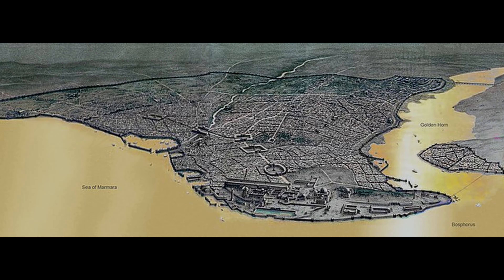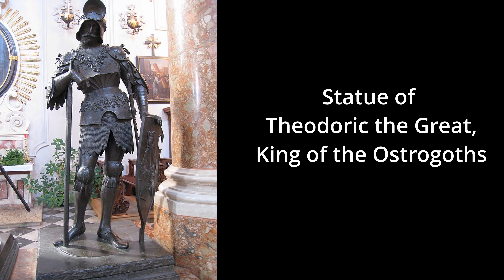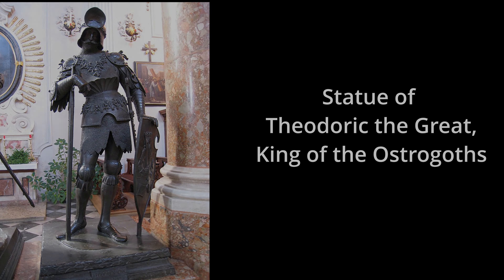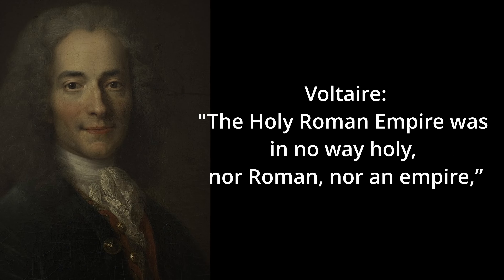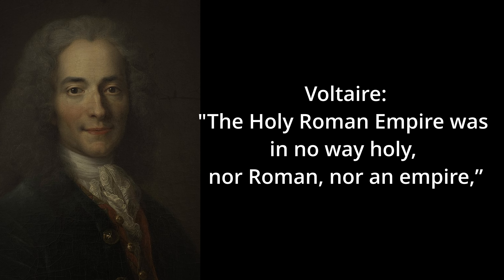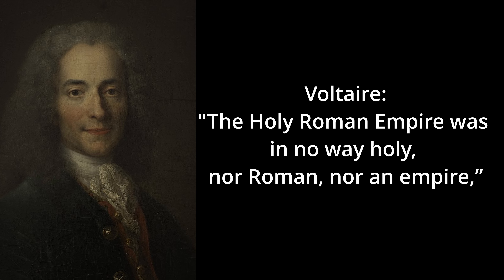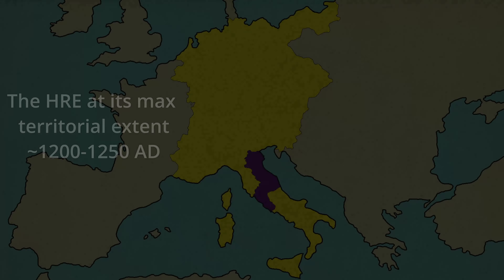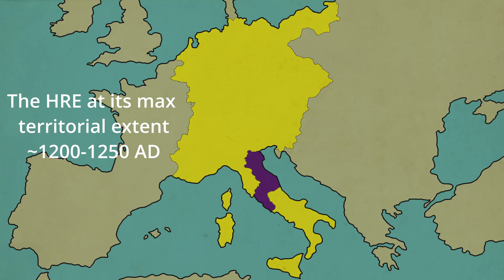The Ostrogoths took over the city of Rome, along with Italy and portions of Illyricum, following the downfall of Romulus Augustulus, the last Western Roman Emperor. But the main successor we need to look at in the West would be the HRE, or the Holy Roman Empire. The HRE gets a bit of a bad rap nowadays, mostly due to the famous Voltaire quote: 'The Holy Roman Empire was in no way holy, nor Roman, nor an empire.' And to be fair, at Voltaire's time this was certainly true, and it was debatably true for all of the HRE's history.